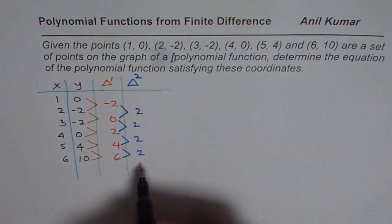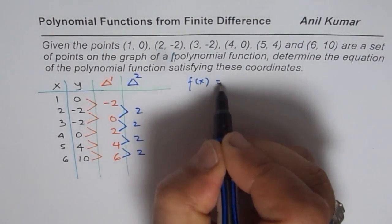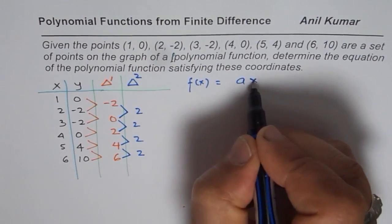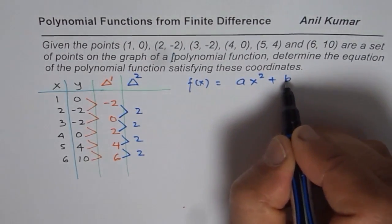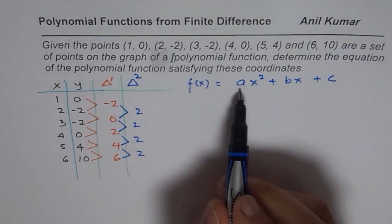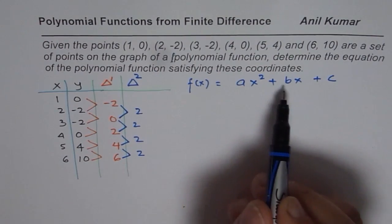Once we get second difference as constant, we know the function is degree 2, a quadratic function, which, in general, could be written as ax squared plus bx plus c. Now, we need to find the value of a, b, and c. That means 3 unknowns. That means 3 equations.